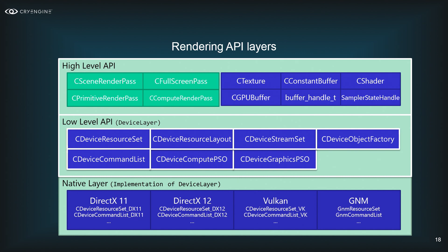The high-level API builds on top of the low-level API and uses all its classes. Very few algorithms in the entire CryEngine use the low-level API directly — you're free to use it if you need high-performance code, but it's fairly tricky with lots of dependencies and boilerplate. Most CryEngine rendering algorithms use the high-level API instead, which is much more programmer friendly.